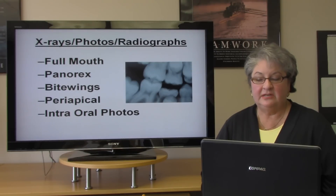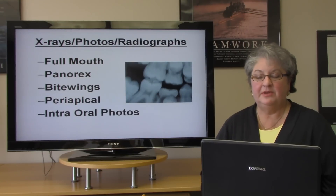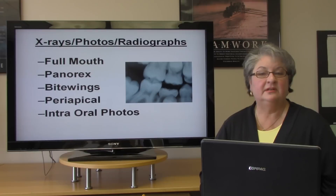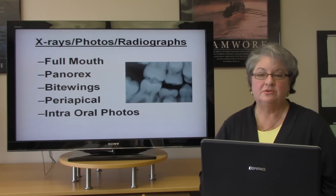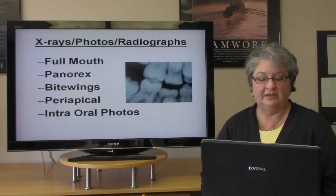Bite wings are illustrated in the picture on this slide. The bite wings are where the patient bites on a tab and both the upper and the lower of the posterior teeth are shown. Normally we take 2 to 4 bite wings every 6 to 12 months.